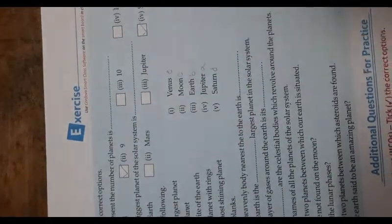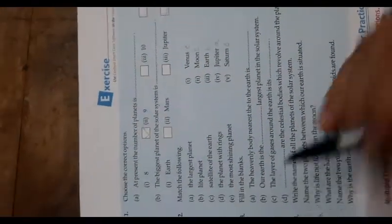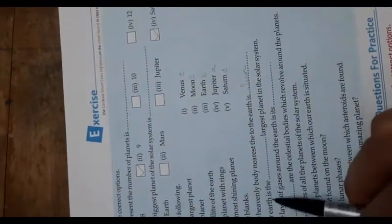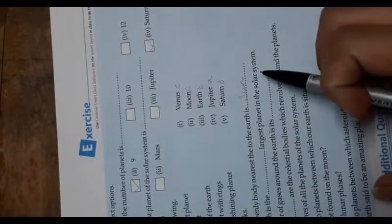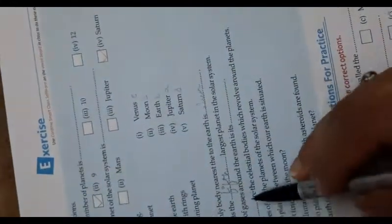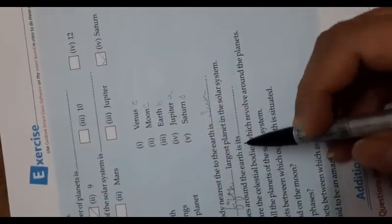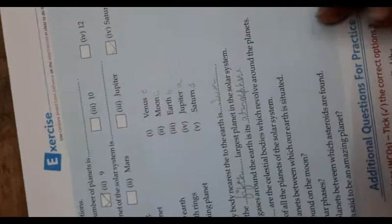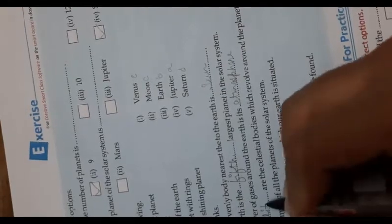Now, fill in the blanks. The heavenly body nearest to the Earth is the Sun. Our Earth is the fifth largest planet in the solar system — F-I-F-T-H, fifth. The layer of gases around the Earth is its atmosphere. Satellites are the celestial bodies which revolve around the planet — S-A-T-E-L-L-I-T-E-S.